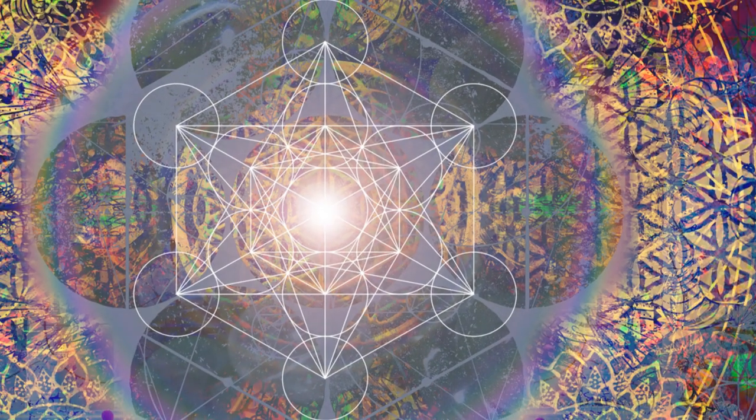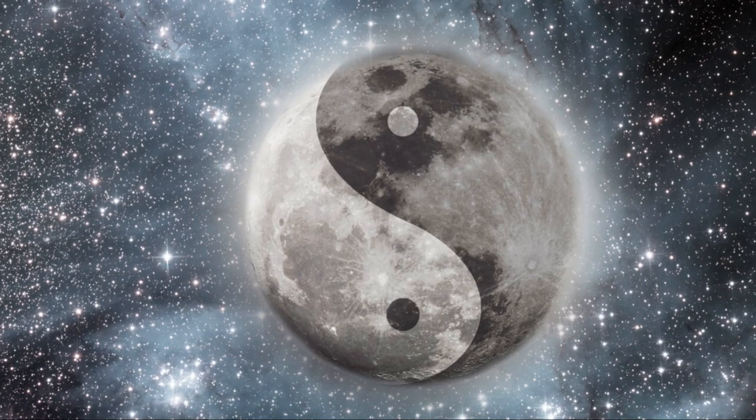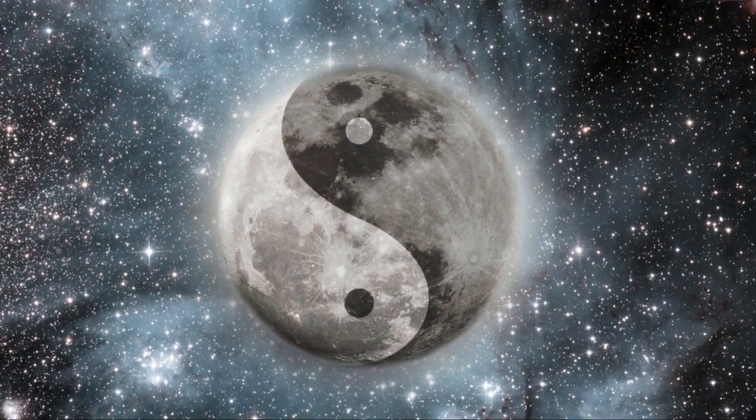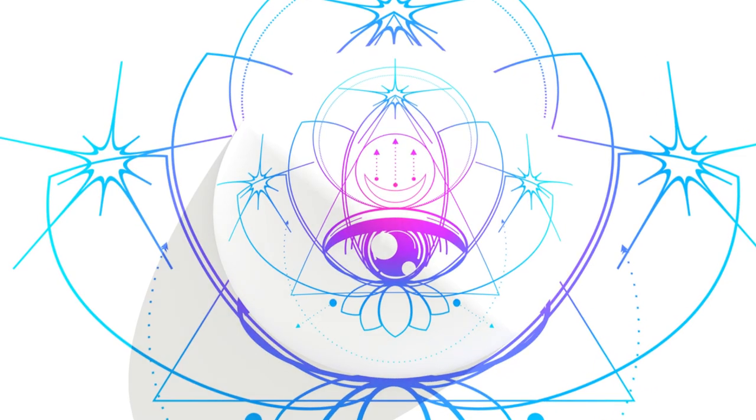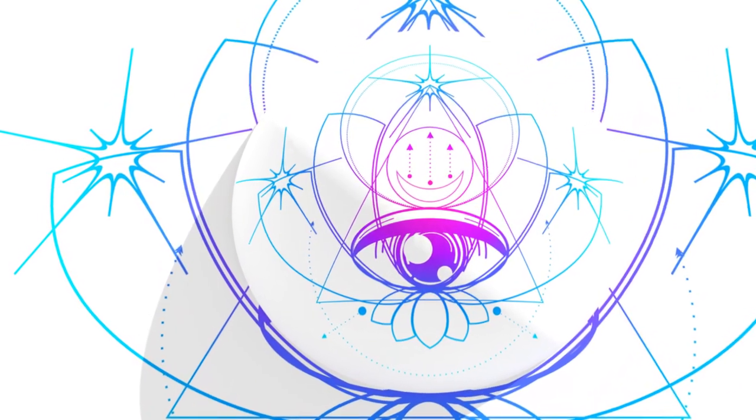This shape has been used in religious and spiritual art for centuries and is often seen as a symbol of duality, balance and the union of opposites. It also represents the intersection of the physical and spiritual realms.